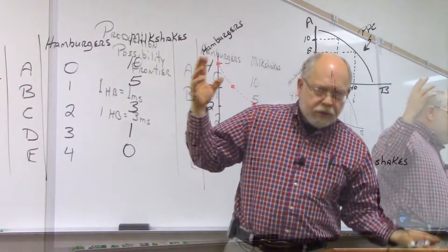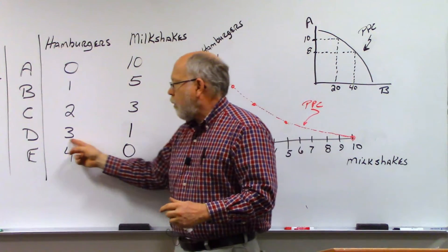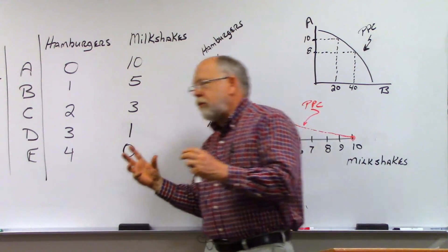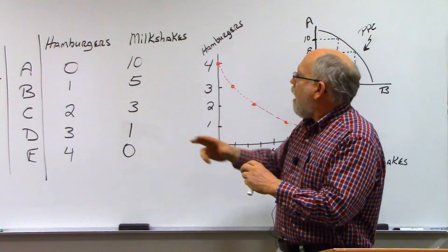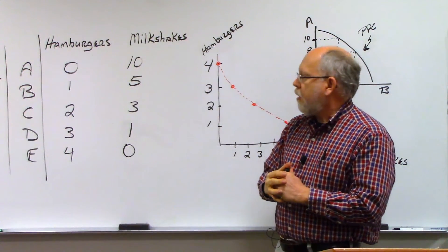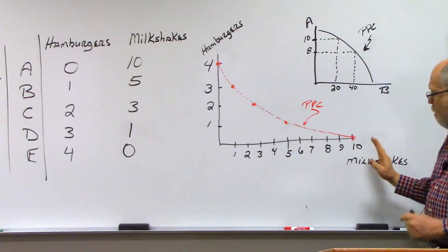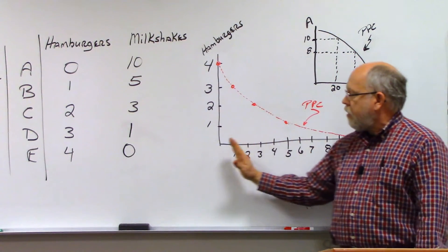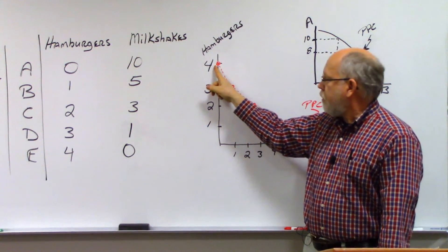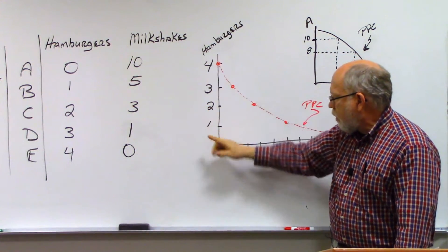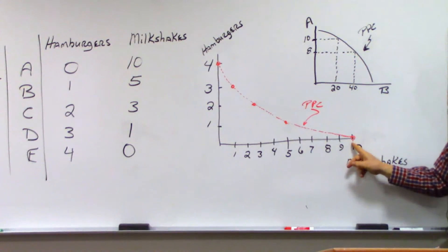So the two extremes are we could devote all of our resources to producing hamburgers, in which case we could produce four units, or we could produce as much as we possibly could with all of our resources, and we would be able to produce 10 milkshakes. So those are the two extremes. If we produce no milkshakes, we're all the way over here to zero with milkshakes, then we can produce a maximum of four hamburgers. But if we don't want to produce any hamburgers, we're down to zero, we could produce a maximum of 10 milkshakes.